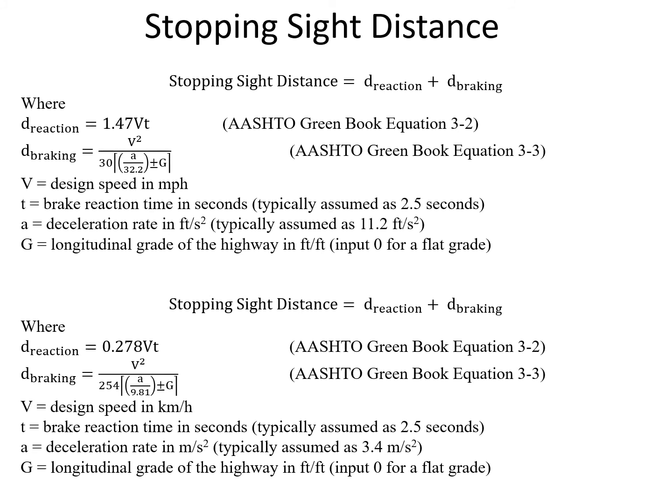The top equation here uses the English units. D sub reaction, the reaction distance is 1.47 times the design speed in miles per hour, and the brake reaction time in seconds. That's typically assumed to be 2.5 seconds. The 1.47 is simply a conversion factor because we're inputting the speeds in miles per hour and the time in seconds. So it's important to make sure you use those correct units, speed in miles per hour and reaction time in seconds, and that's for our reaction distance.